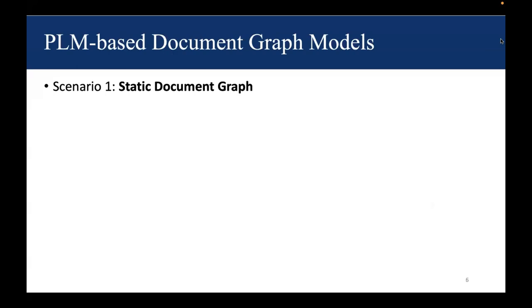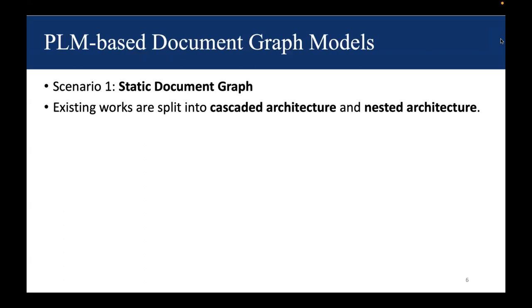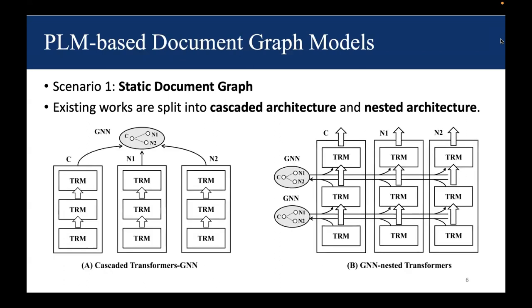The first scenario of document graph is a static document graph. Existing works can be split into cascaded and nested architectures. The left-hand side figure is the cascaded architecture. We first use language models to encode each individual document, and then we apply graph neural networks on top to aggregate embeddings.